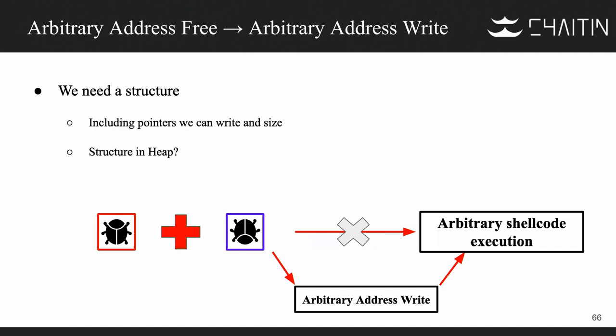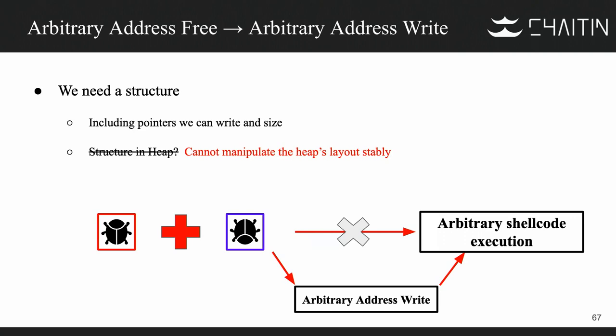When we first tried to exploit this vulnerability we used heap structures, but we found we cannot manipulate the heap's layout stably, because the VMX frequently allocates and releases memory. So we cannot use heap structures. After reversing VMX code, we found a structure named 'channel', used in VMware RPCI. VMware has a series of RPC mechanisms to support communication between guest and host — and it has an interesting name: 'backdoor'. RPCI is one of them.